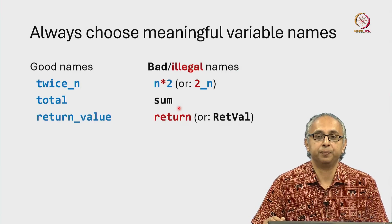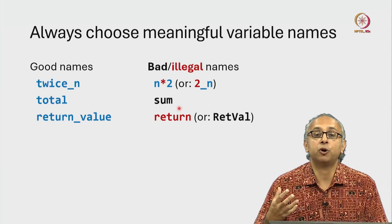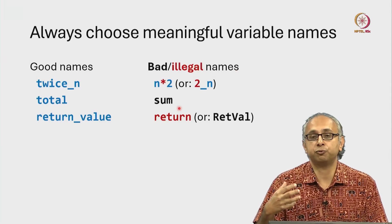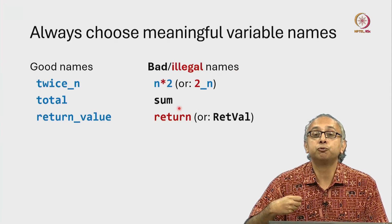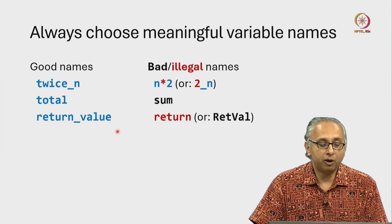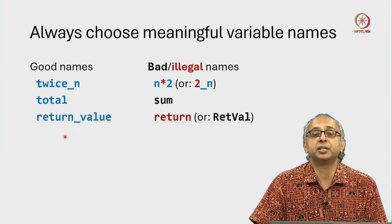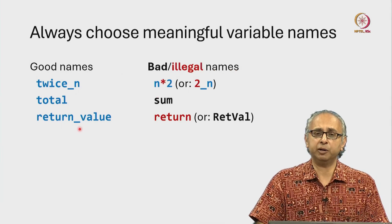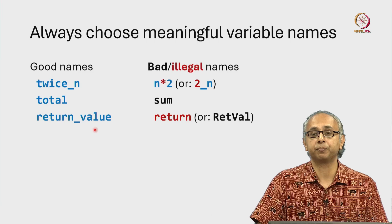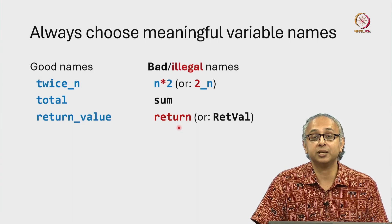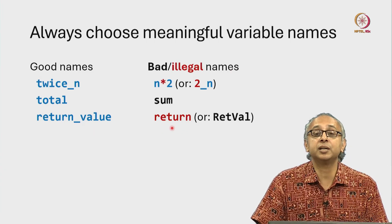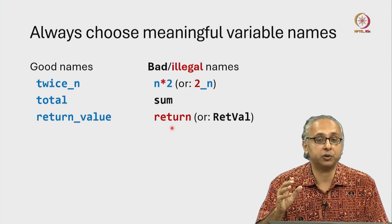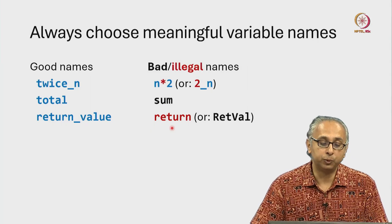In a later lecture, we will start our exploration of functions in Python. When a function is ready to produce an answer, it will return that answer — we call that the return value. So a good variable name is return_value. An illegal name is 'return' because it is a special word in Python — what we call a keyword — and you cannot name your variables with keywords.